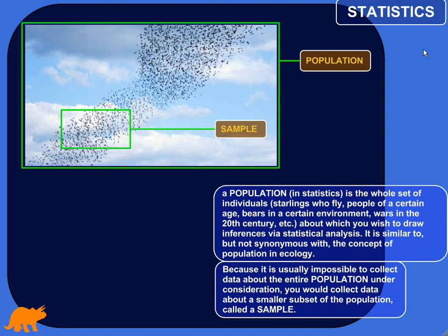Your report would be about honeybees who live on commercial farms — that would be your population. Your statistical analysis would have implications for that group, and whatever you say in your report, you're claiming it generally holds true for all honeybees on commercial honey farms. But because it's usually impossible to collect data about your entire population, you collect data from a subset, called a sample. This process is called sampling.